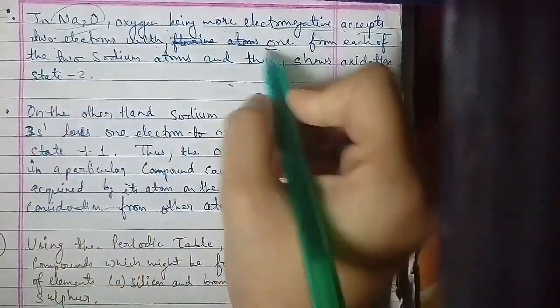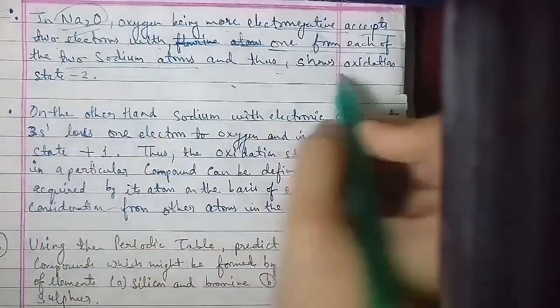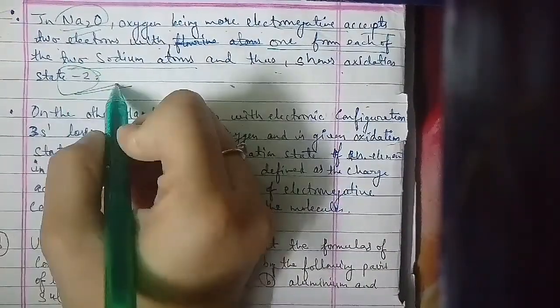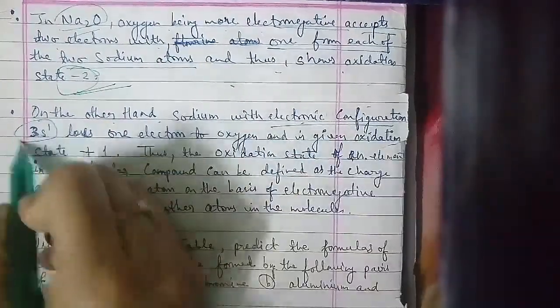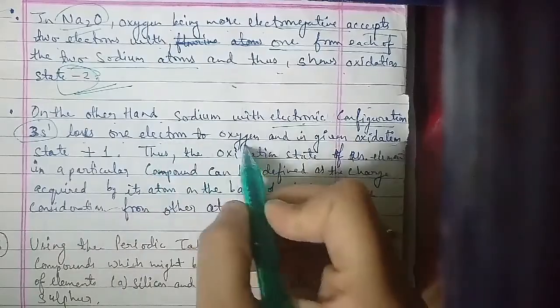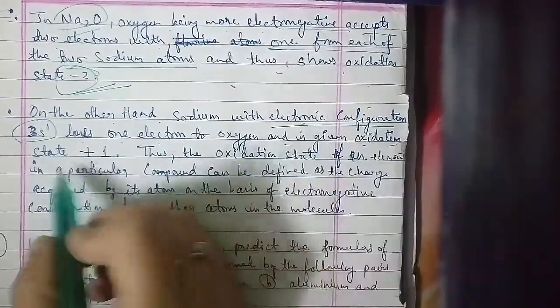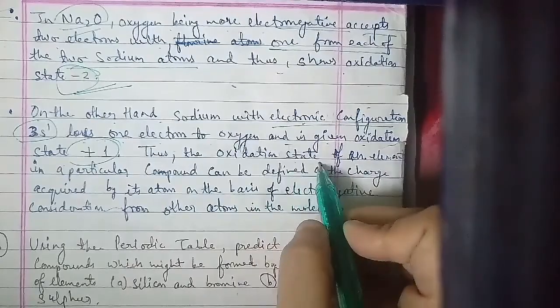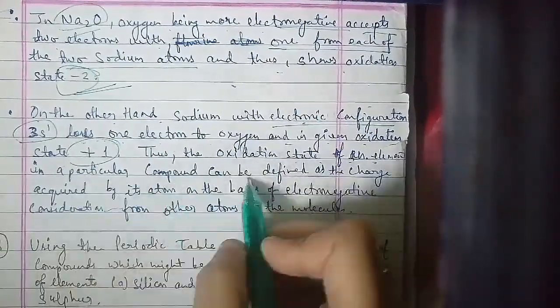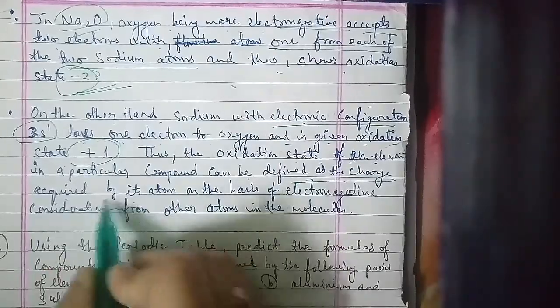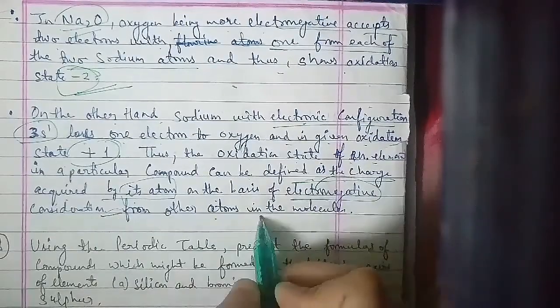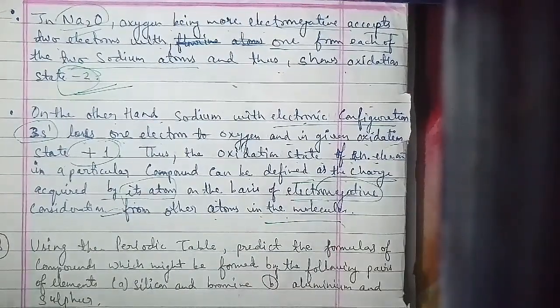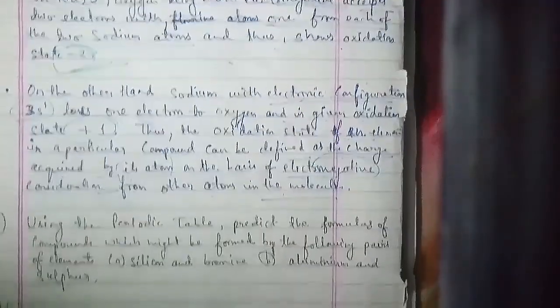In Na2O, oxygen being more electronegative accepts two electrons — one from each sodium atom — and thus shows an oxidation state of minus two. Sodium with electronic configuration 3s1 donates one electron to oxygen, and is assigned an oxidation state of plus one. The oxidation state of an atom in a compound can be defined as the charge acquired by its atom on the basis of electronegativity considerations from other atoms in the molecule.